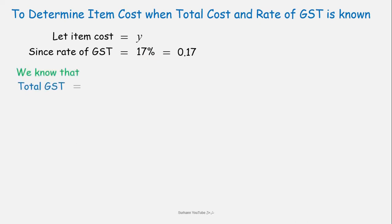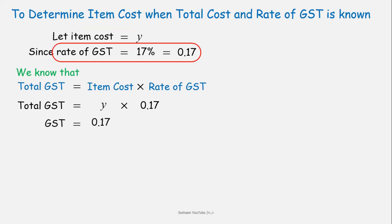We know that total GST is equal to item cost multiplied by rate of GST. Now by putting these values in this formula, item cost is Y and rate of GST is 0.17. By solving this, we will get 0.17Y. This is the GST value.